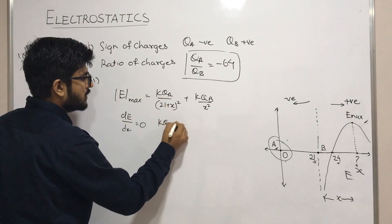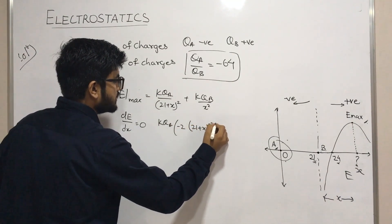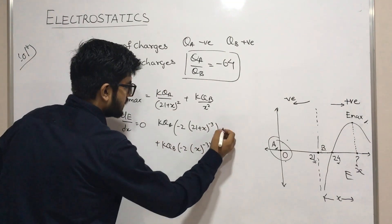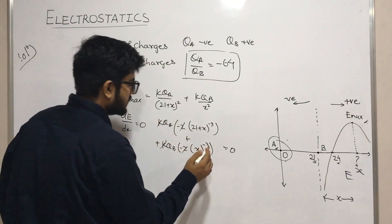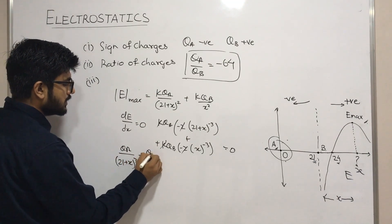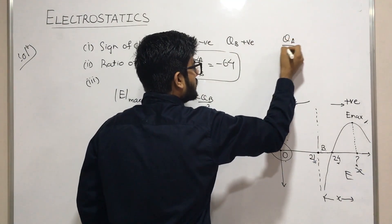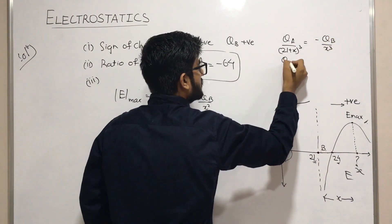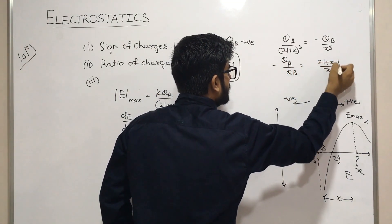Differentiating and setting equal to zero: k·qa·(21+x)^(−2) differentiated gives a term, and qb·x^(−3) term. After simplification we get qa upon (21+x)³ plus qb upon x³ equals zero. Rearranging: qa upon (21+x)³ equals minus qb upon x³, so qa upon (minus qb) equals (21+x)³ upon x³.